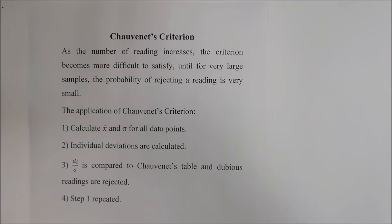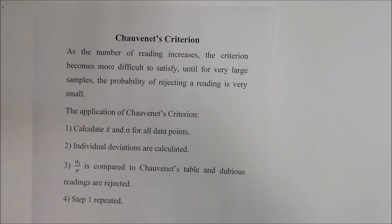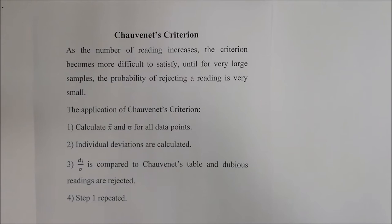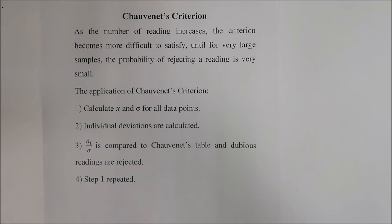The first topic is Chauvenet's criteria. When you have a group of readings, a few random errors could influence your average value or standard deviation calculation. Chauvenet's criteria looks at the average values and standard deviation, and if any reading is considered a random error it can be rejected. It's a useful tool to justify that your readings are accurate. There are four steps to follow.